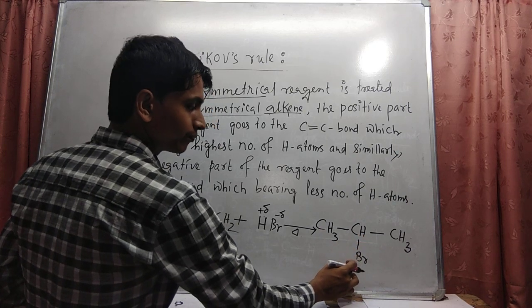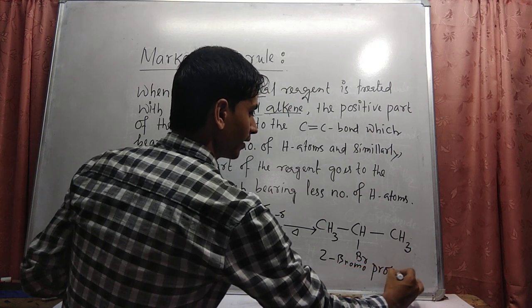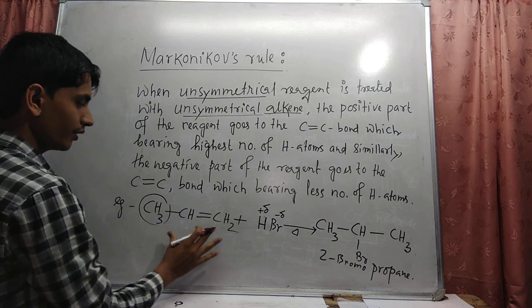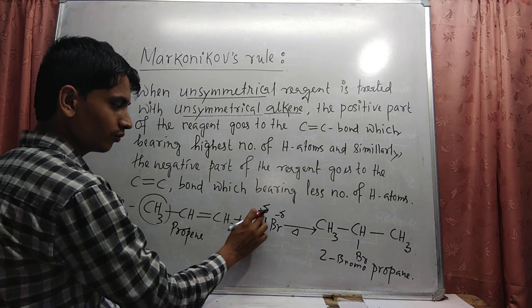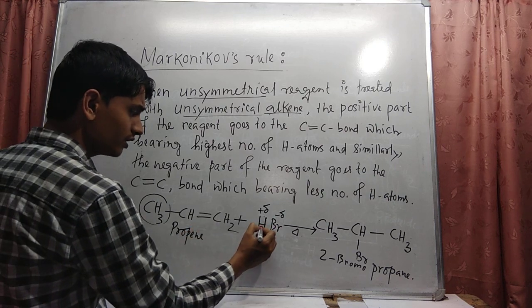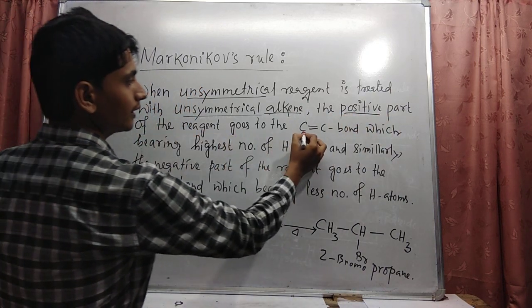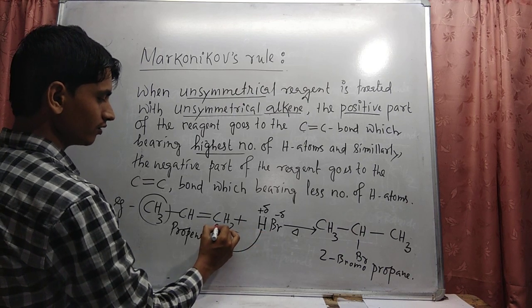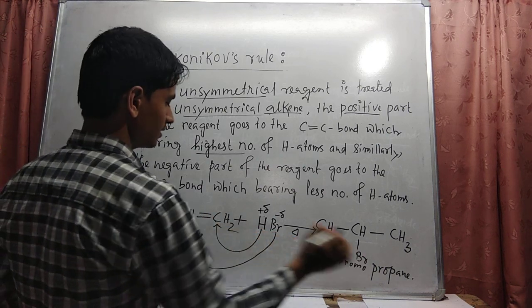The product name is 2-bromopropane. This is called Markovnikov's addition. That means when propene (an alkene) reacts with HBr, which is unsymmetrical because it has one positive and one negative part, in the presence of heat — the positive part of the reagent goes to the carbon-carbon double bond bearing the highest number of hydrogen atoms. The hydrogen adds to that carbon, making two hydrogen atoms on it, and the negative part (Br) goes to the other carbon atom, forming this product.